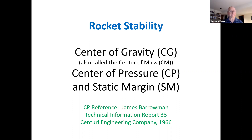For rocket stability, you're most interested in the center of gravity, sometimes called the center of mass, and the center of pressure for a rocket. If you can figure out where both of those are located — typically measured down from the tip of the nose cone — you can generate a static margin, which is how far apart those two locations are in terms of diameters of the rocket. As long as the static margin is positive, the rocket will be considered stable. If it's negative, it's unstable. If it's between zero and one, that's considered marginally stable. If it's greater than one, it will be considered stable.